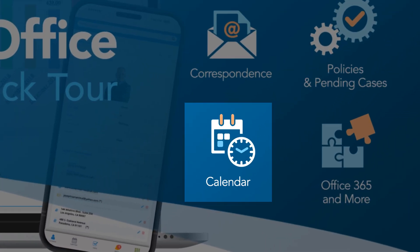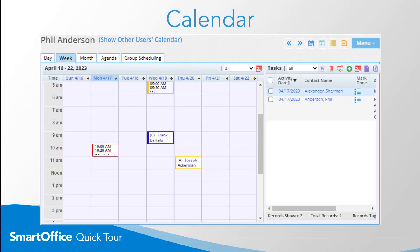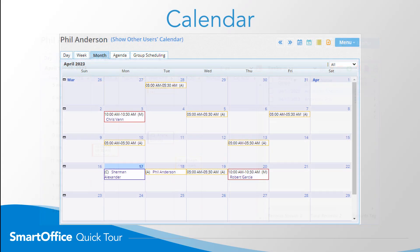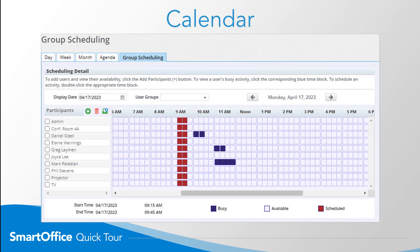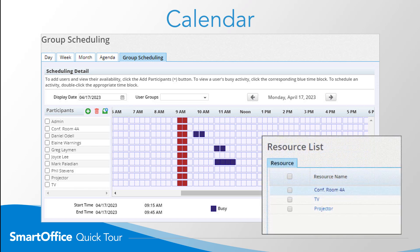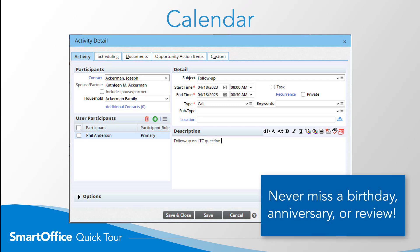The SmartOffice calendar is a powerhouse of features that includes day, week, month, and agenda views. Group scheduling capabilities, shared calendar views, and resource scheduling for conference rooms, projectors, and more. The calendar also has automatic activity creation for key dates such as birthdays, anniversaries, annual reviews, and other events, to ensure you never miss another opportunity.